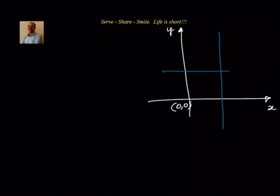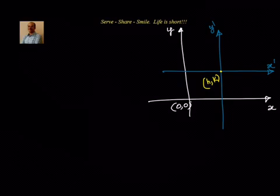With the origin shifted to (h,k), we have the new x-axis and new y-axis, and the point (h,k) is the new origin. We take an arbitrary point. Let us say this point has coordinates (x,y) with respect to the old coordinate system. With respect to the new coordinate system, its coordinates are (x-dash, y-dash). Now we want to find the relation between x, y and x-dash, y-dash.